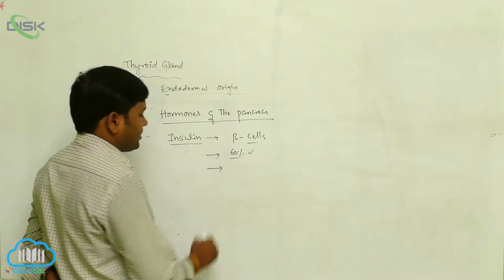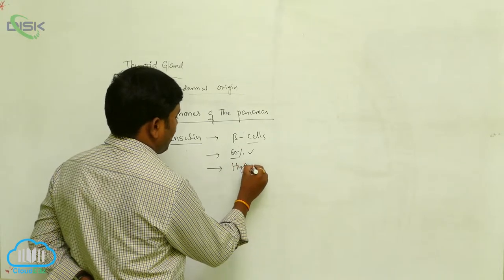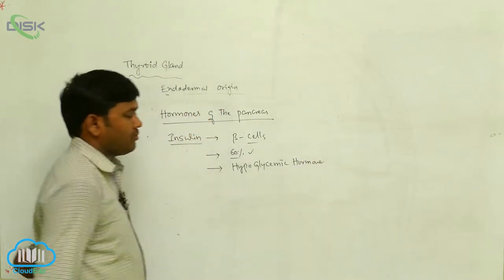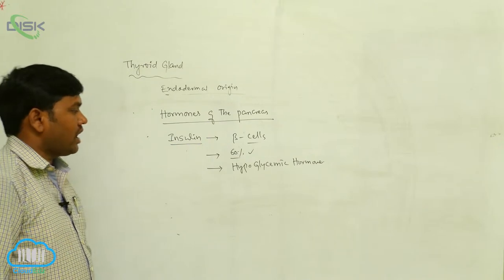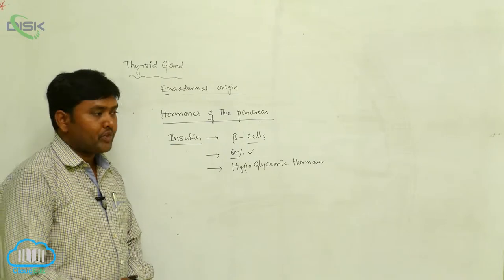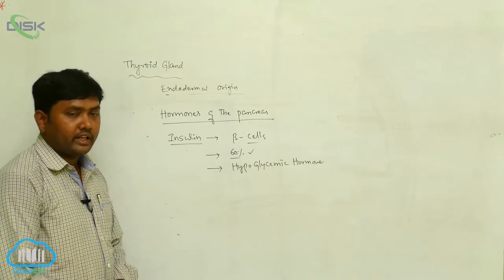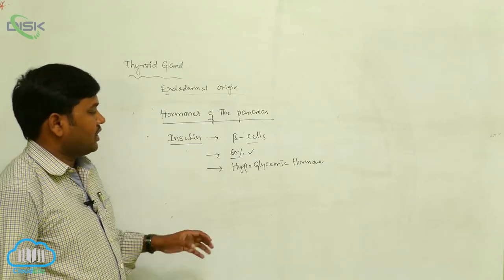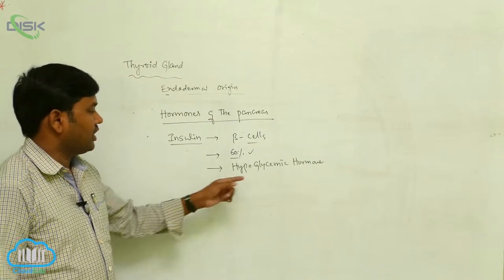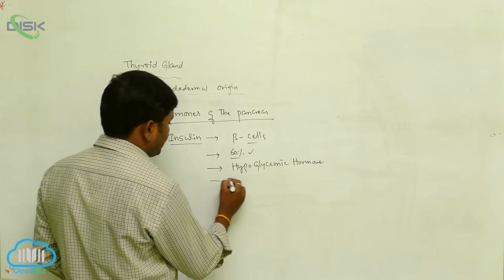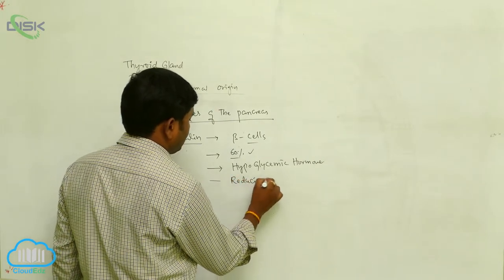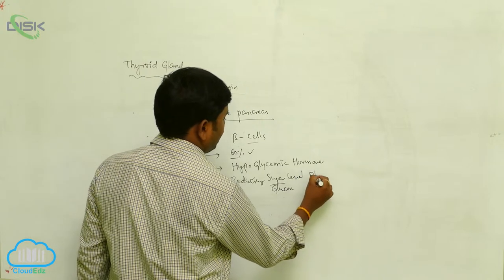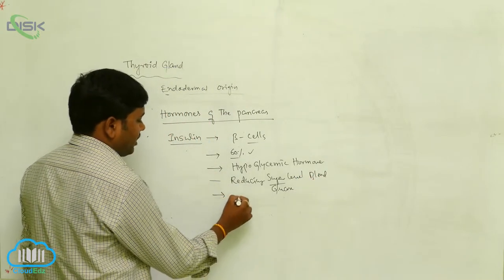Insulin is also called the hypoglycemic hormone. Why is it called the hypoglycemic hormone? Whenever the glucose levels are increased in the blood, insulin is activated and it reduces the sugar or glucose levels in the blood.